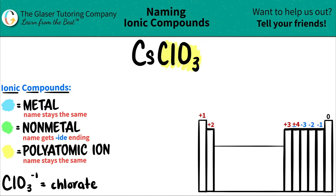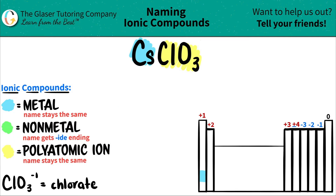The only thing we have to address now is the cesium, the Cs. If I look on the periodic table, cesium is right down here — it's in group one. All of group one are metals except for hydrogen, so cesium is a metal. Now we have everything accounted for, so we can start naming.